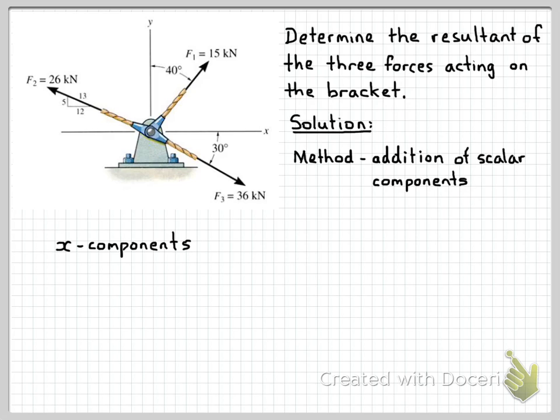First off, we'll find all of the scalar components in the x-direction, or the x-components. We'll look at each force in turn. So first off, we'll look at the force F1. Whenever we're using scalar components, x and y components, it's important to indicate what the x and y directions are. In this case, it's actually defined in the problem. We've got x and y directions already indicated, so we don't need to specify that again.